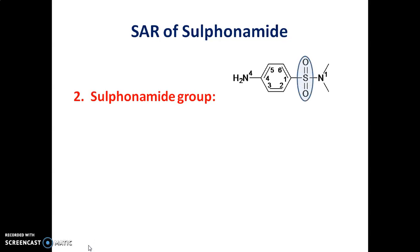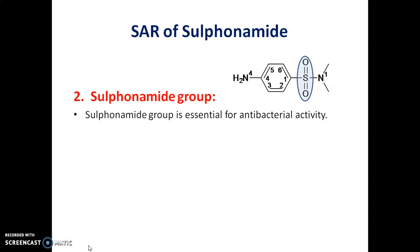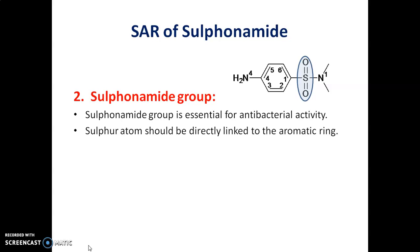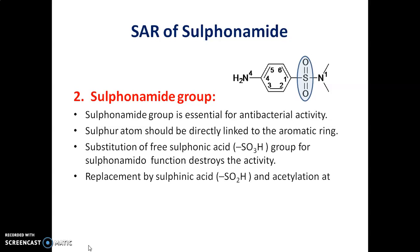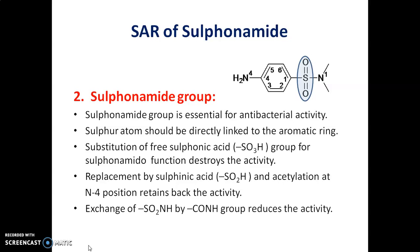The second point is about the Sulphonamide group. The Sulphonamide group is essential for the antibacterial activity. The Sulphur atom should be directly linked to the aromatic ring. Substitution of the free Sulphur acid group by a Sulphonamido function destroys the activity. Replacement by Sulphur acid and its acetylation at N4 position retains back the activity. Exchange of SO2NH by a CONH group reduces the activity.